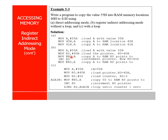So this direct addressing program copies 55H to memory locations 40H and 41H, and the register indirect addressing program also does the same thing — 55H is copied to 40H and 41H — but here we are doing it using register indirect addressing.